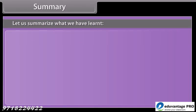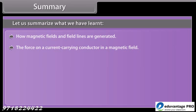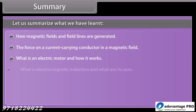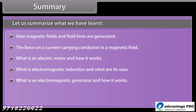Summary. Let us summarize what we have learned. How magnetic field and field lines are generated. The force on a current carrying conductor in a magnetic field. What is an electric motor and how it works. What is electromagnetic induction and what are its uses. What is an electromagnetic generator and how it works. The use of wires and fuse in domestic electric circuits.